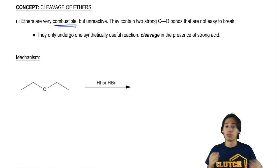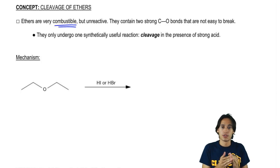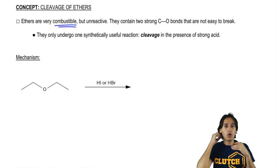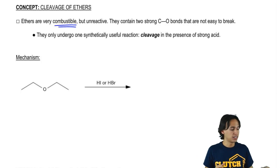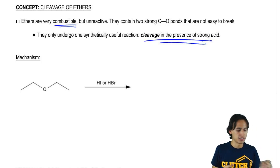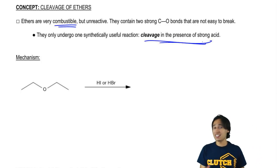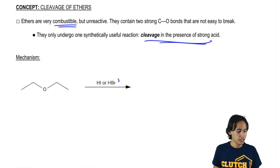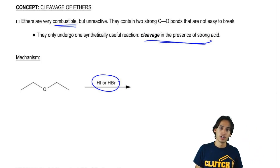Ethers are very combustible like alkanes. They have a lot of energy stored in those bonds. But in terms of breaking those bonds heterolytically so that you get a negative and a positive, that's very difficult to do with ethers because they're very strong bonds. So the only thing we can do is that we can cleave them in the presence of strong acid. And the acid has to be super strong. It can only be HI or HBr. So that means HCl and HF are not strong enough to make an ether cleave.